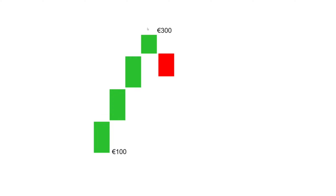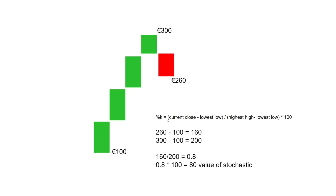Here's a small example of how the stochastic is calculated. If the bottom price of these five candles is 100 and the highest price is 300, and the close of the last candle is 260, the formula is: current close minus the lowest low, divided by the highest high minus the lowest low, times 100. So 260 minus 100 is 160, divided by 300 minus 100 which is 200, equals 0.8, times 100 gives you 80 — that is the stochastic value.